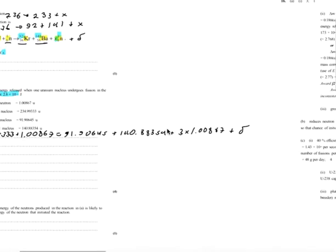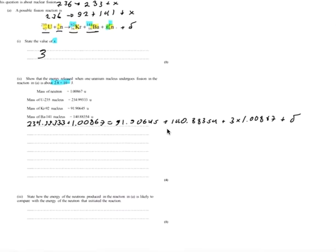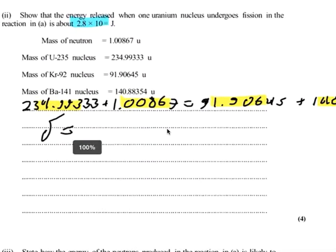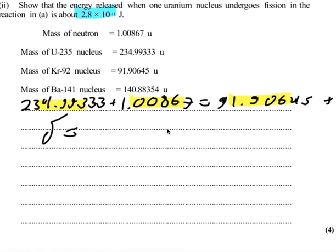So that looks like a disgusting equation, but actually, it's all just numbers. It's not too hard to punch it into your calculator and just solve for that mass defect. When I did that, I found that it was 0.186 AMU.